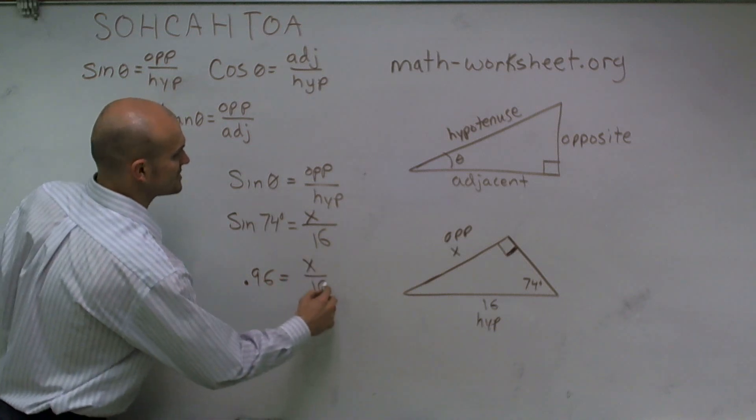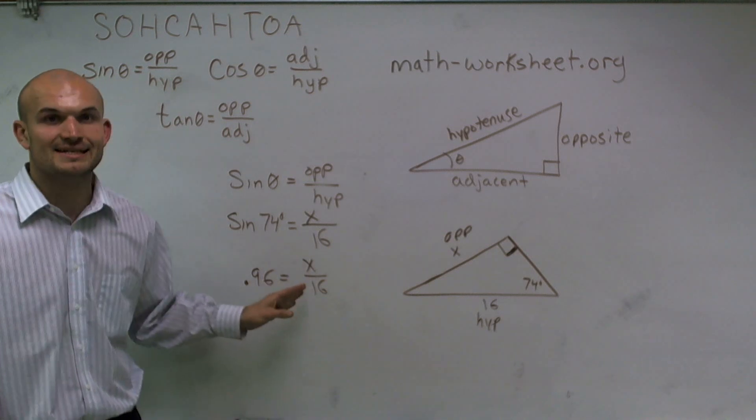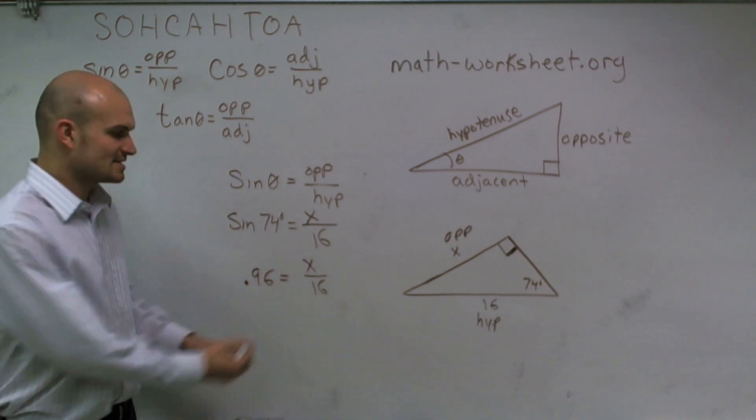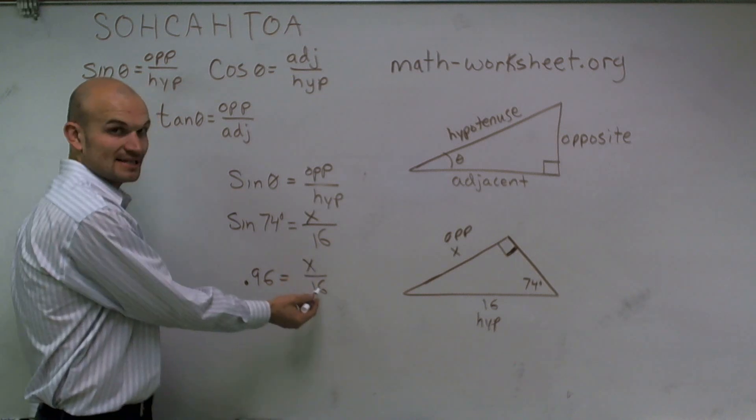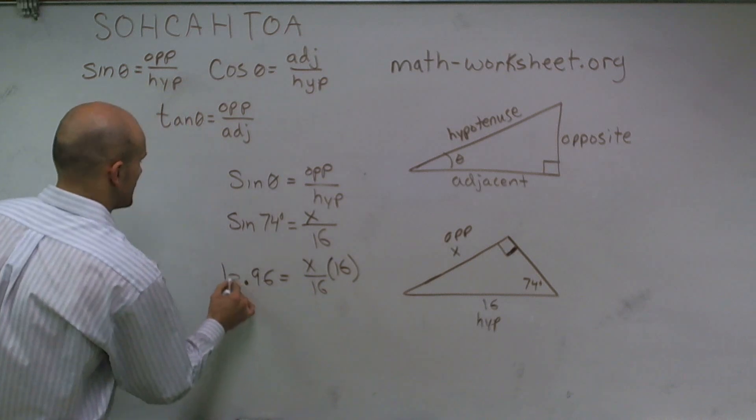and that equals x over 16. To find the value of x, I need to get rid of the 16. Since I'm dividing x by 16, to undo division, I need to multiply by 16 on both sides.